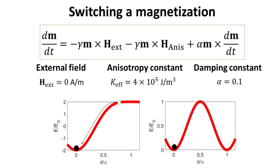Magnetization switching is vital to spintronics. By manipulating the magnetization direction in magnetic layers, spintronics enables the development of efficient and low-power electronic devices like magnetic memories, spin logic circuits, and magnetic sensors. Advancements in understanding and controlling magnetization switching have paved the way for innovative technologies with improved performance, efficiency, and reliability.